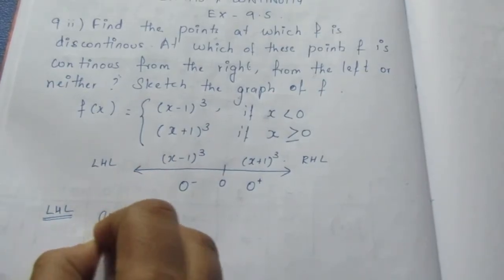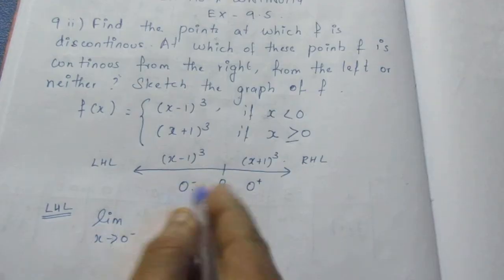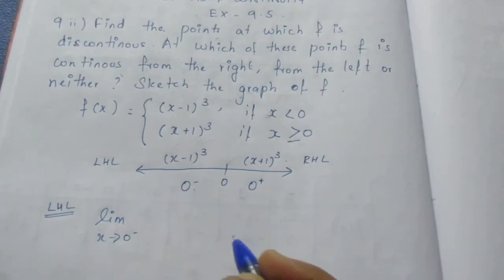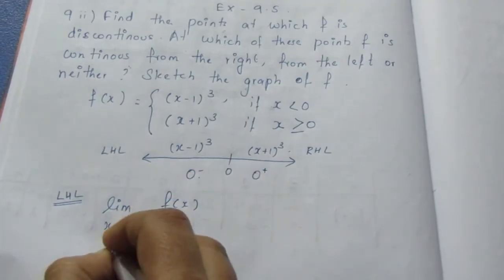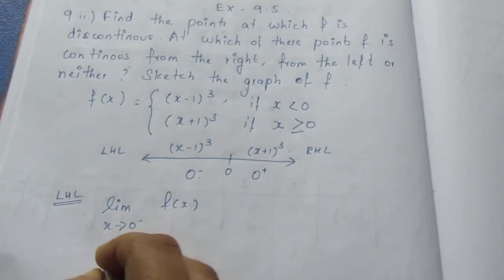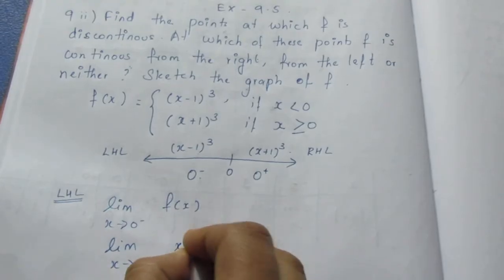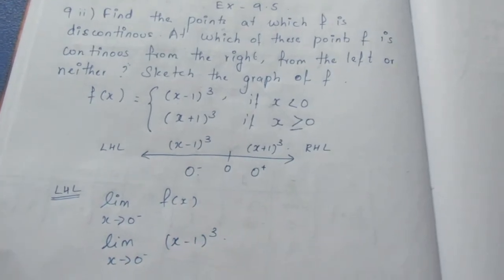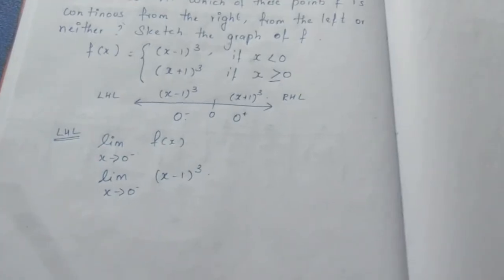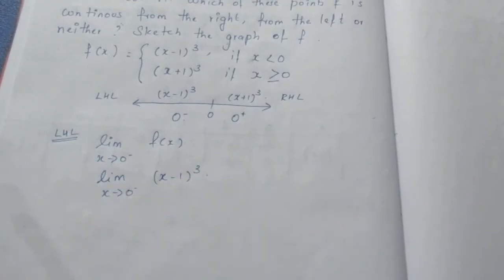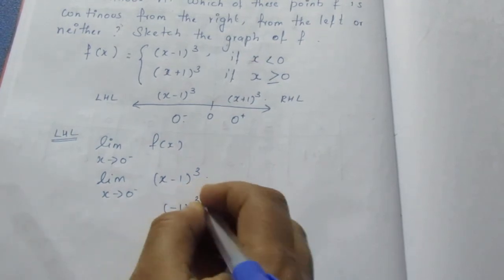x tends to 0 minus — the left hand side is less than 0, so we use the negative branch. The limit as x tends to 0 minus of f(x) is (x minus 1) whole cube. Substituting 0: (0 minus 1) whole cube equals (minus 1) whole cube.